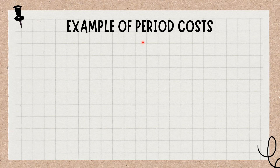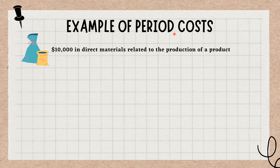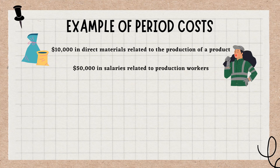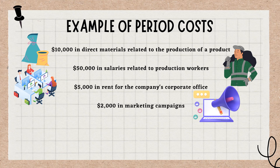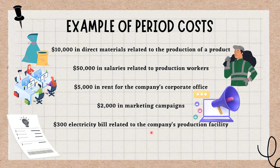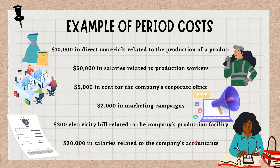Example of Period Costs: The following illustrates costs incurred by a manufacturing company in the first year of operations: $10,000 in direct materials related to the production of a product; $50,000 in salaries related to production workers; $5,000 in rent for the company's corporate office; $2,000 in marketing campaigns; $300 electricity bill related to the company's production facility; and $20,000 in salaries related to the company's accountants.